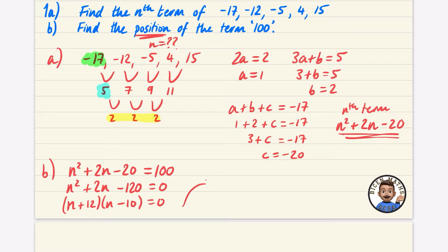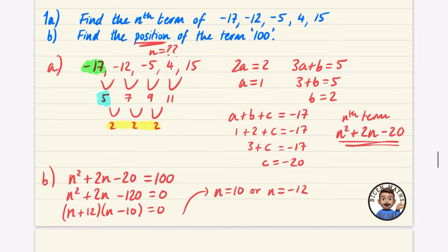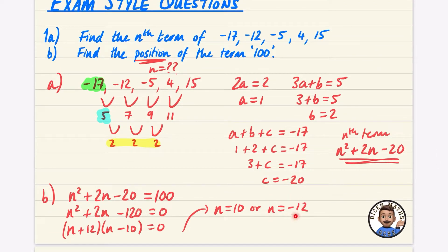So this means that either n is equal to 10 or n is equal to -12. But does it make sense for the position of a sequence to be -12? No, it doesn't. So the position of the term 100 is the 10th position.